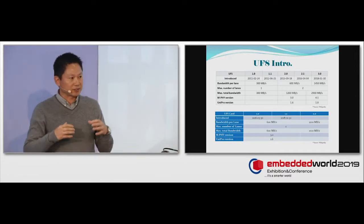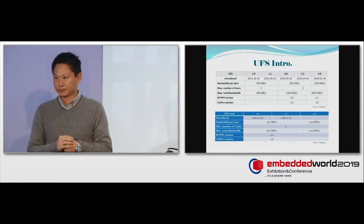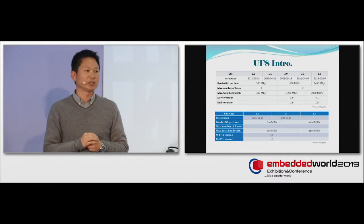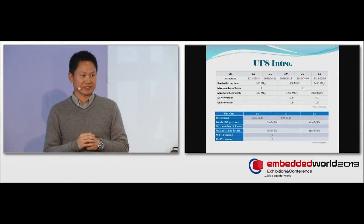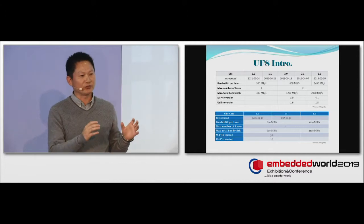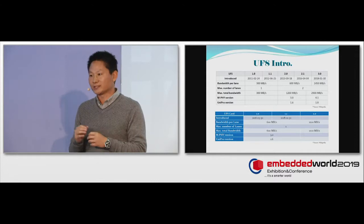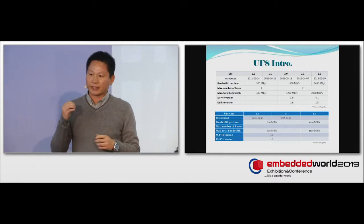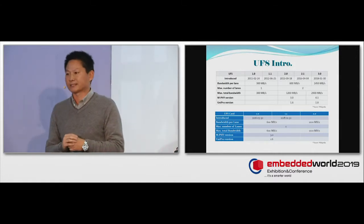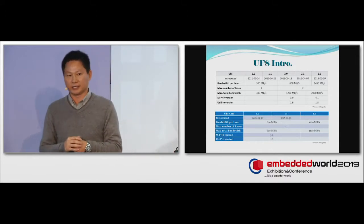So UFS, the speed of UFS can go up to 600 megabytes per second, and that is only with one single lane. With two lanes, the speed can go up to 1,200 megabytes per second. And this is UFS 2.0 and 2.1 spec. UFS 3.0 spec, which some companies are already working on, the speed can go up to 3 gigabytes per second. And this is already faster than, very similar to PCIe speed already.